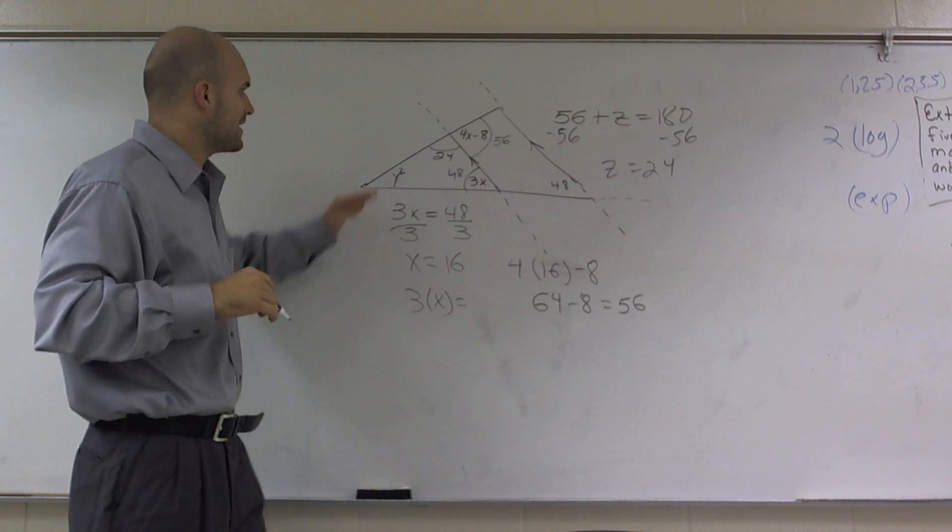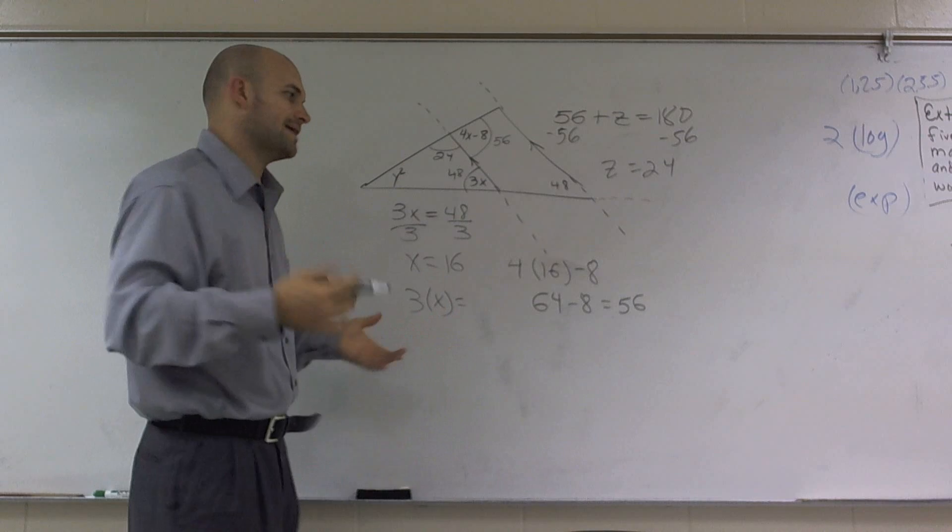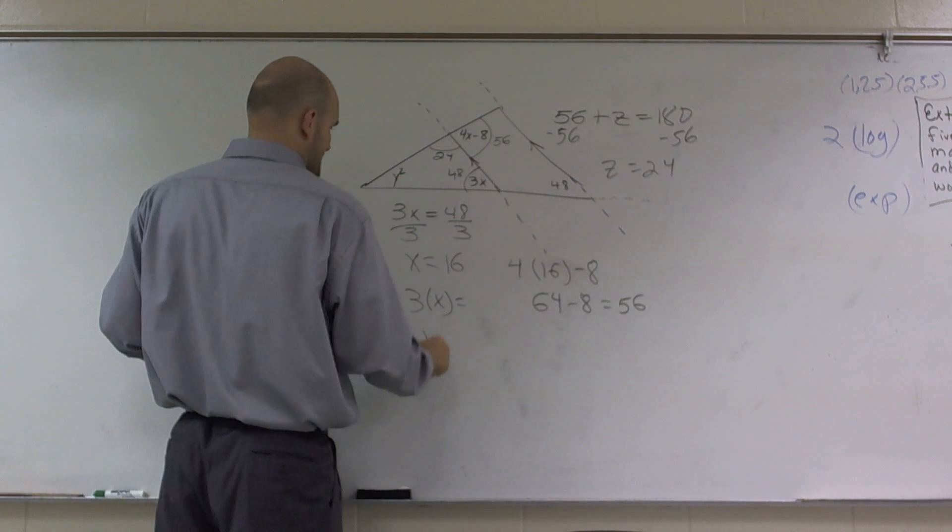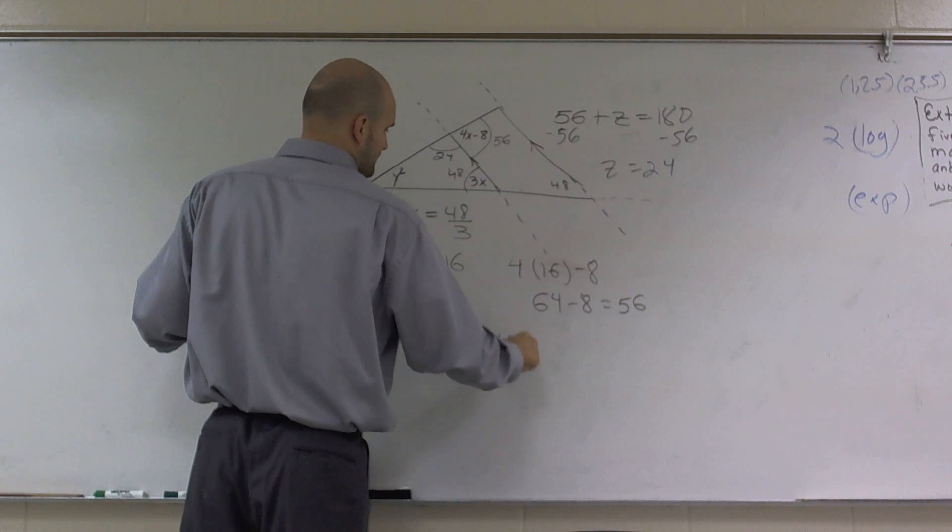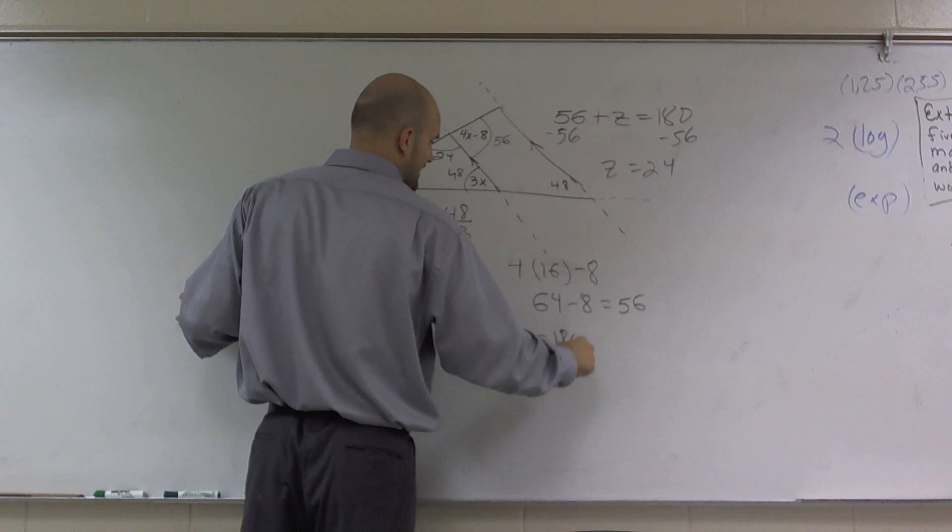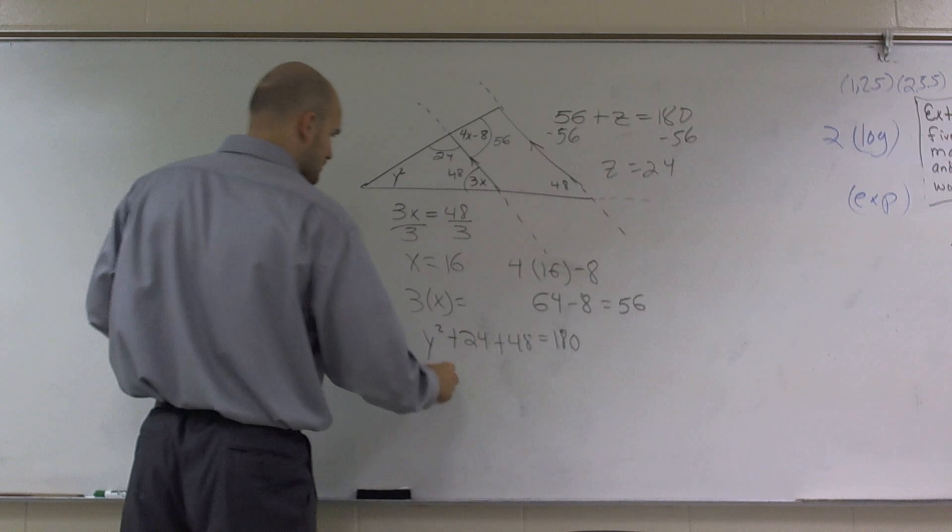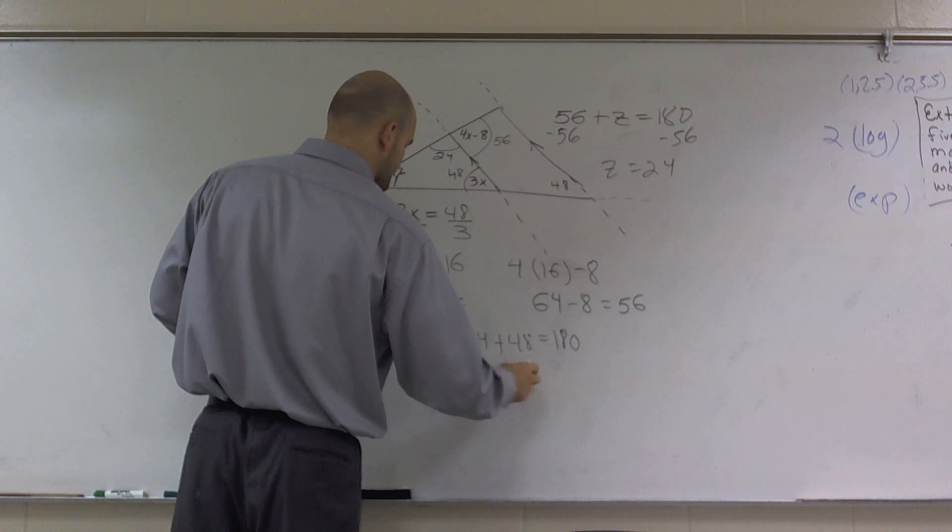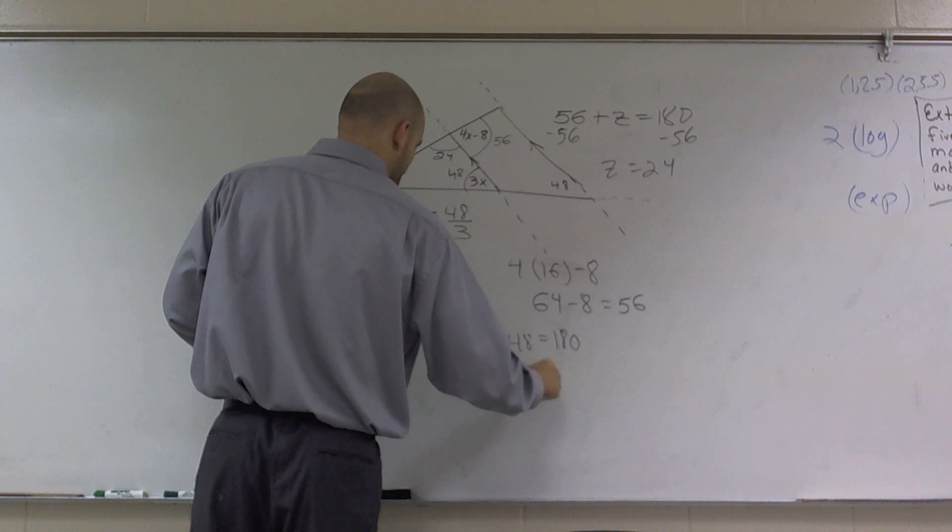All right, so now what I have is I have a triangle. And we should know that all the degrees in a triangle add up to 180 degrees. So the last equation I'm going to write is y squared plus 24 plus 48, all the angles of my triangle add up to 180 degrees. Well, I can combine these to give me 72, so y squared plus 72 equals 180.